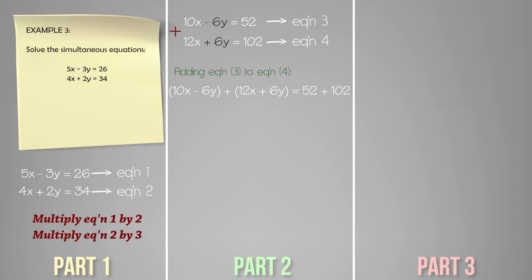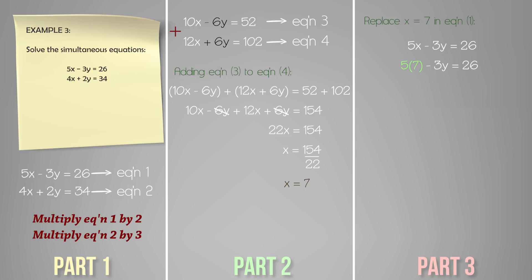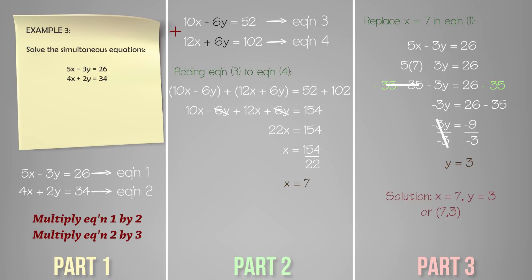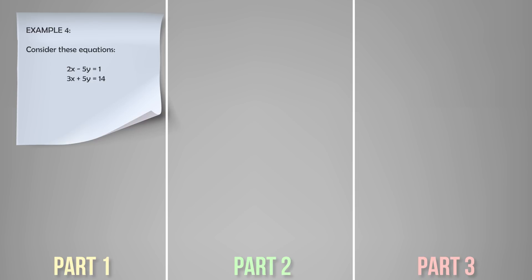Adding both equations: 10x minus 6y plus 12x plus 6y equals 52 plus 102. Expanding and simplifying, the y terms are eliminated, leaving 22x equals 154, so x equals 7. Substituting x equals 7 into equation 1: 5 times 7 minus 3y equals 26, giving 35 minus 3y equals 26. Subtracting 35 from both sides: negative 3y equals negative 9. Dividing both sides by negative 3 gives y equals 3. The full solution is x equals 7 and y equals 3.